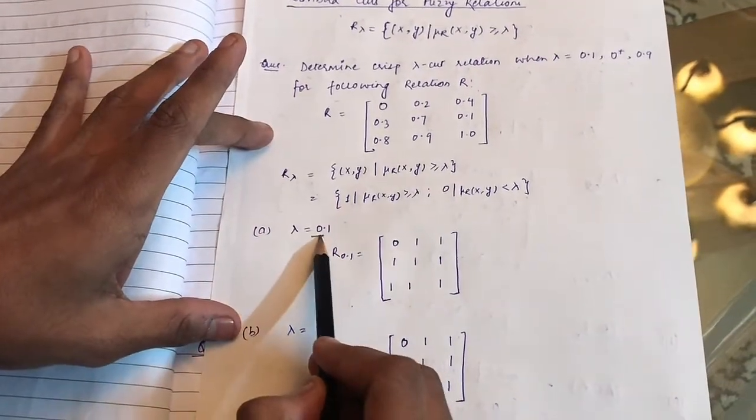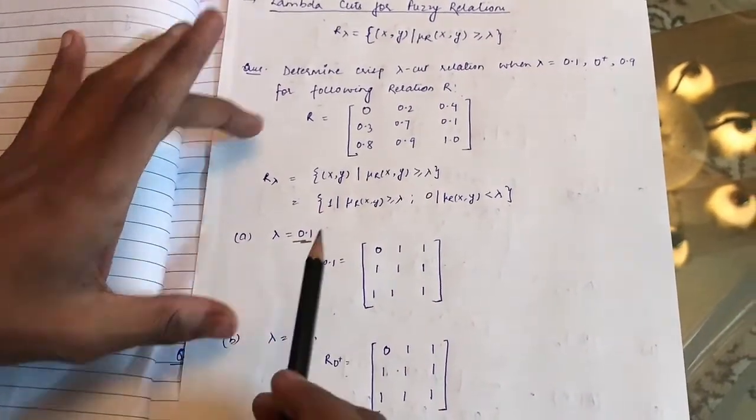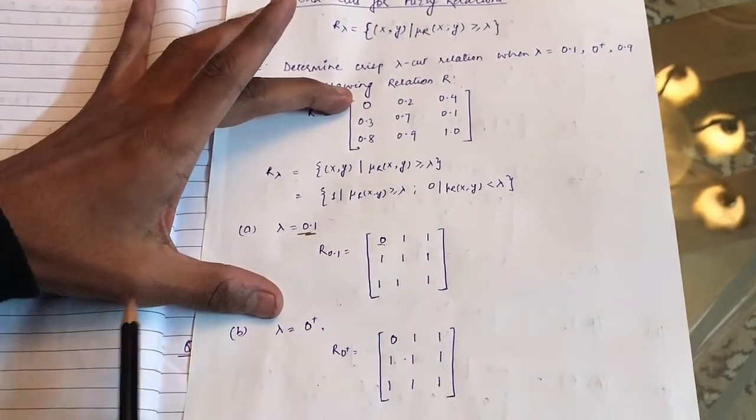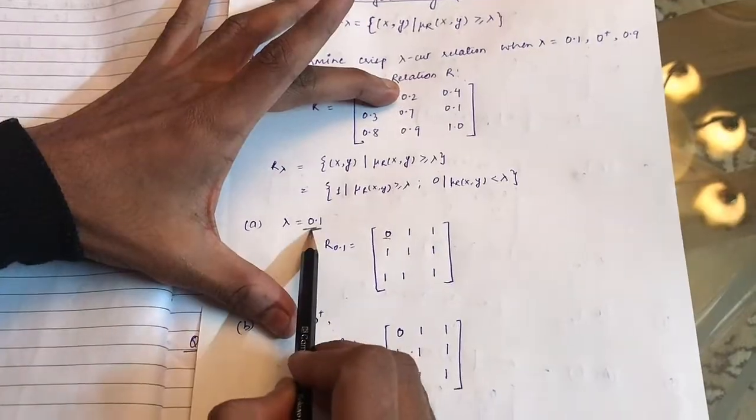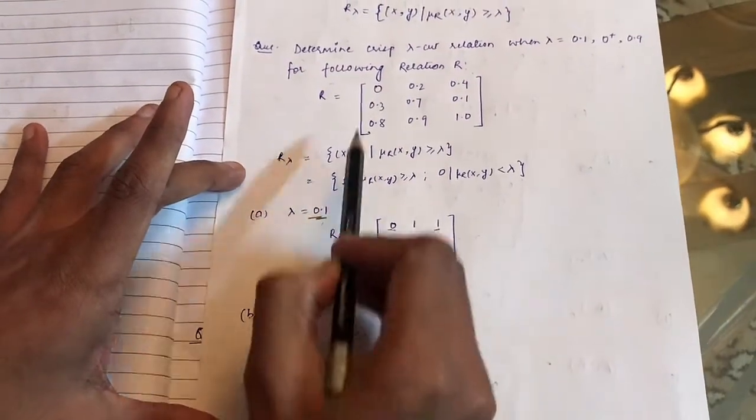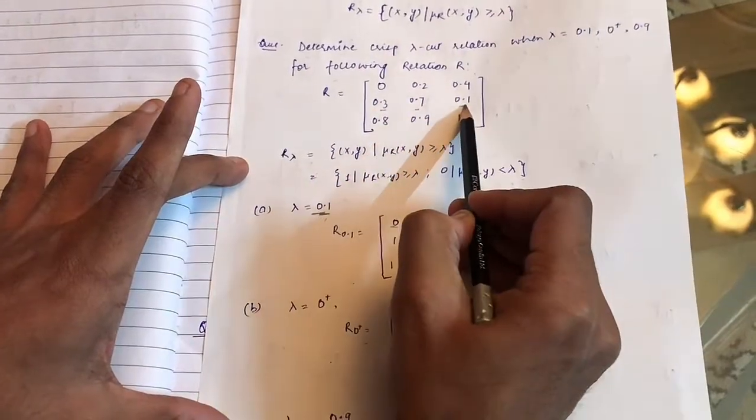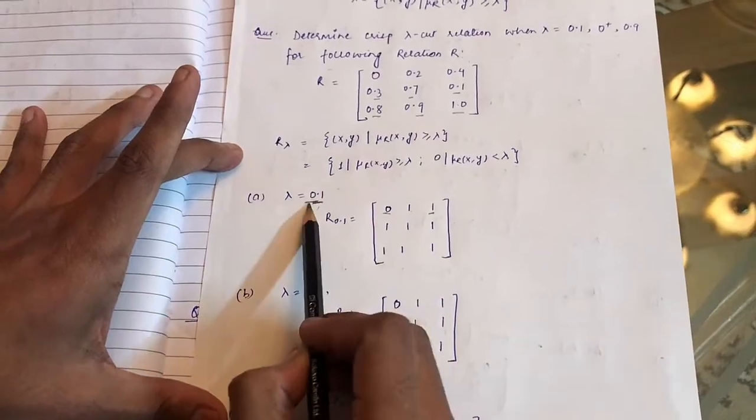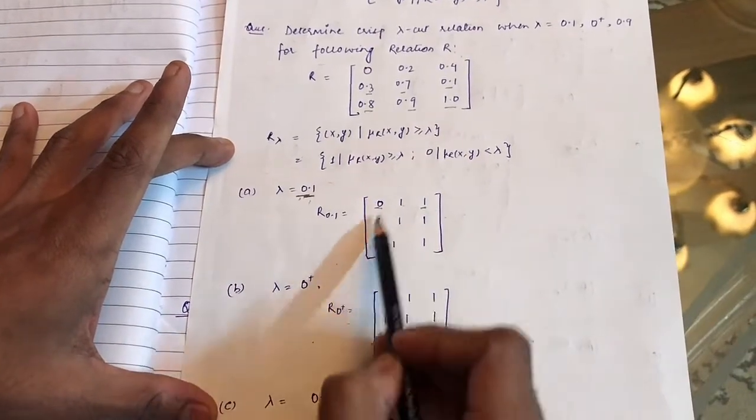For example, if lambda equals 0.1, 0 is less than 0.1 so 0 we have done it. 0.2 is greater than 0.1 so 1. 0.4 is greater than 0.1 so 1. Similarly 0.3, 0.7, 0.1, 0.8, 0.9, 1.0—all these values are greater than or equal to 0.1, so we have made them as 1.